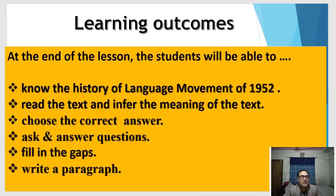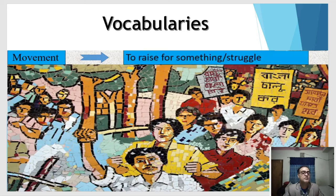Now let's learn the word meanings — vocabulary. First word: 'movement.' Look at the picture and try to guess the meaning. Movement means: to raise a struggle for something. Next word: 'declare.' Look at the picture and try to guess the meaning. Declare means: announce.